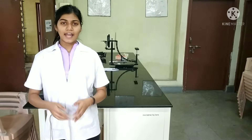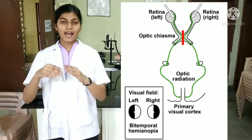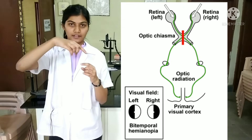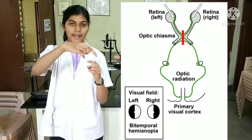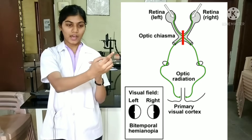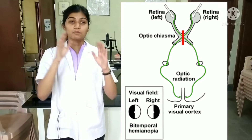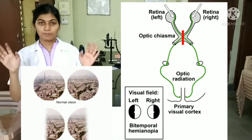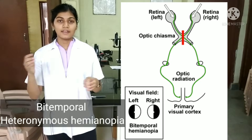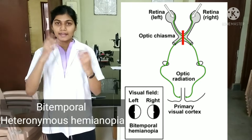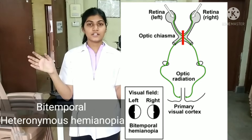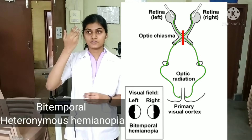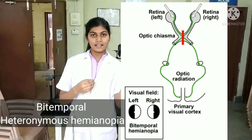If there is a lesion at the level of the optic chiasma, the fibers that cross at the optic chiasma are on the medial side. These medial fibers cross and project into the temporal side. So for both eyes, the nasal field of vision is normal but the temporal field cannot be seen. We call this bitemporal heteronymous hemianopia — bitemporal because for both eyes the temporal field is not visible, and heteronymous because it affects the right side in the right eye and the left side in the left eye.